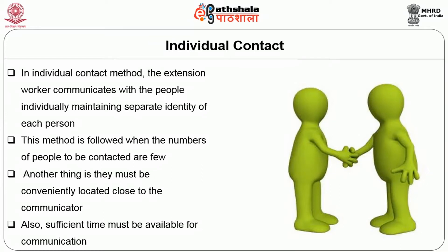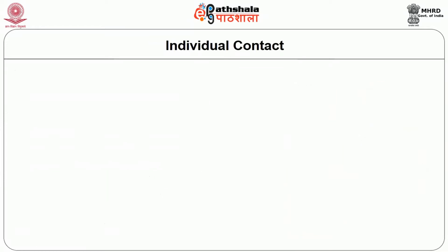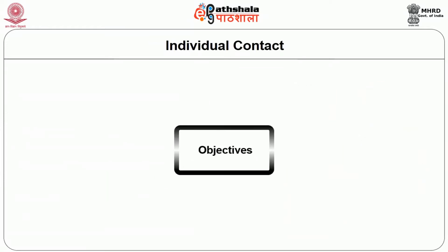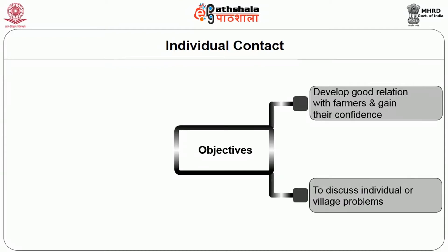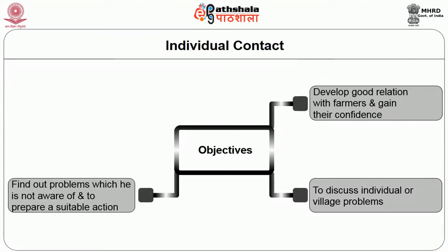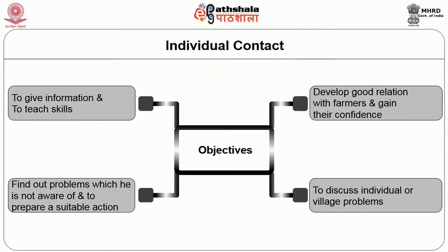The objectives of individual contact methods are: to develop good relations with farmers and gain their confidence; to discuss individual or village problems; to find out problems which the extension worker is not aware of and prepare a suitable action; to obtain or give information; and to teach skills.